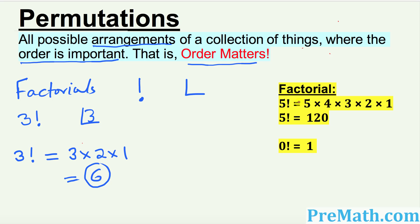Look at the right-hand side example. So 5 factorial is what? 5 factorial could be written as 5 times 4 times 3 times 2 times 1. And if you multiply it, you're going to get 120. And one more thing, just keep in mind always — very crucial — 0 factorial is always equal to 1.